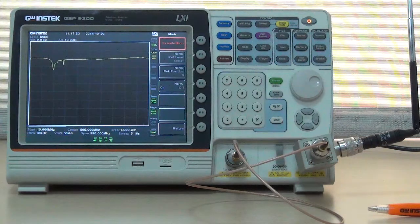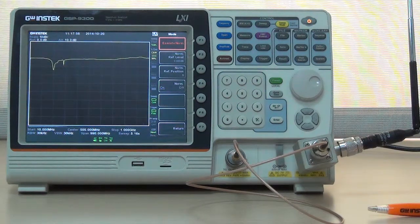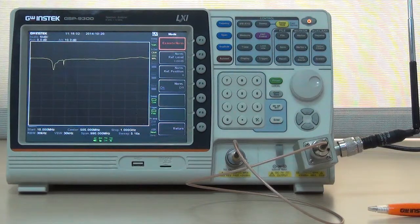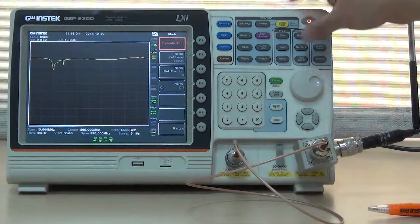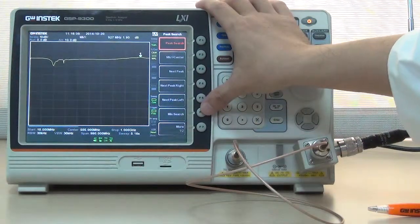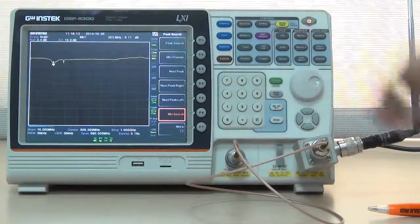The test result of scalar network analysis shows antenna return loss between 10 MHz and 1000 MHz. Press P Search and select F6 Minute Search to automatically search antenna's working frequency.